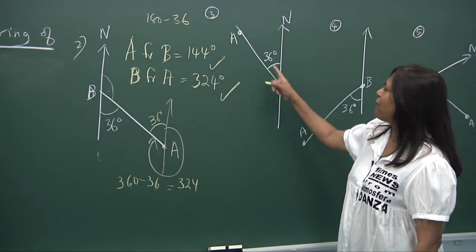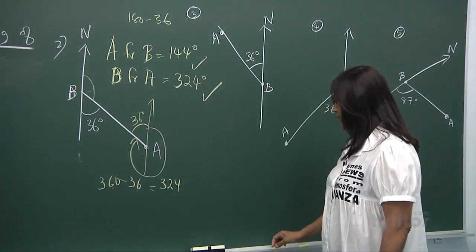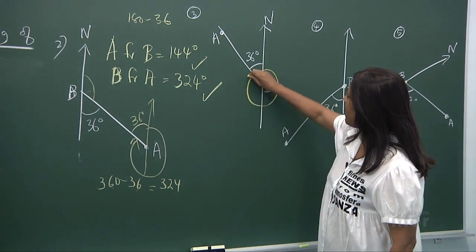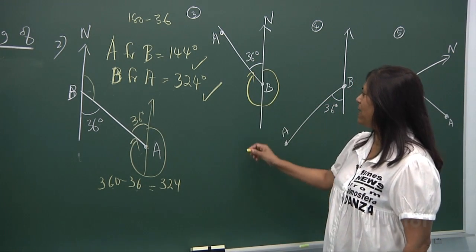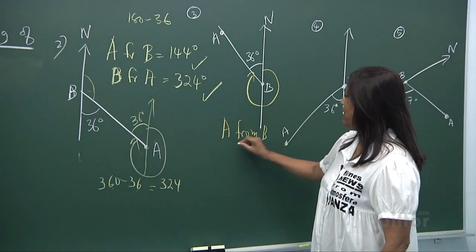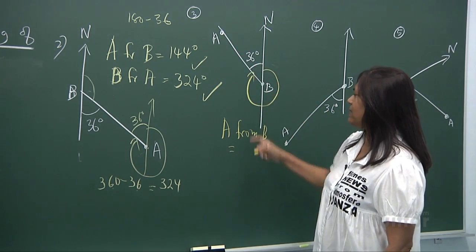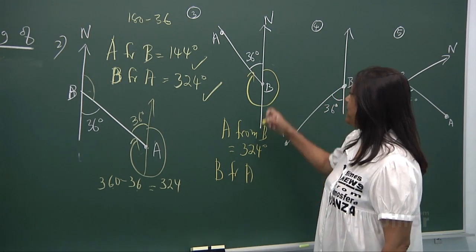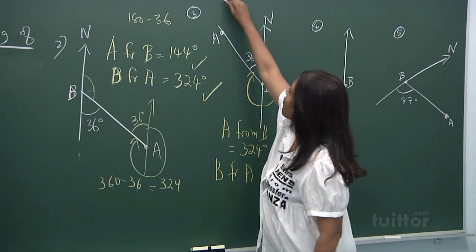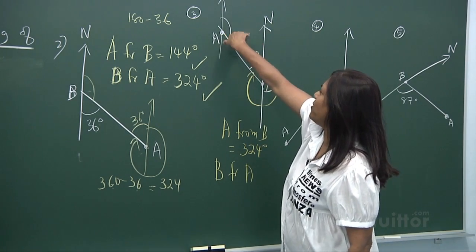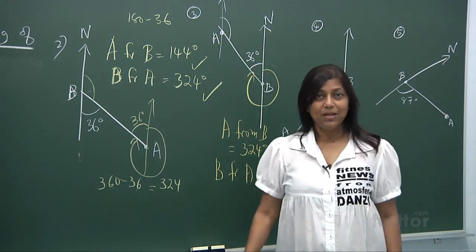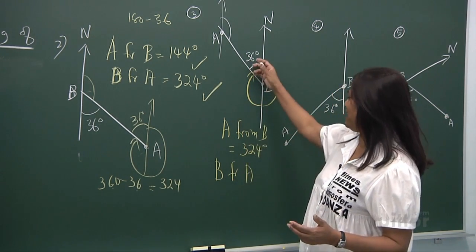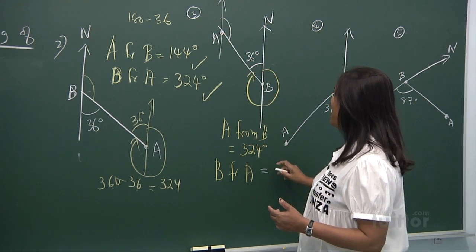For the bearing of A from B, you go from north all the way around — it's 360 minus 36, which is 324 degrees. For B from A, draw north from A and look at the two parallel lines — interior opposite angles — 180 minus 36 gives 144 degrees.